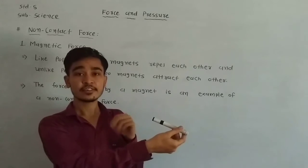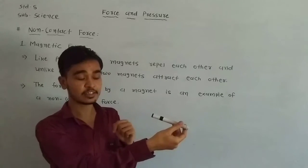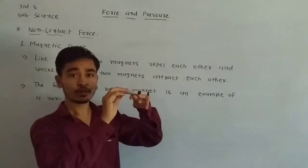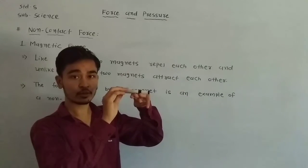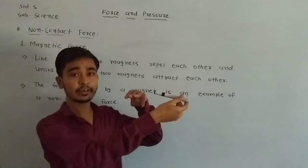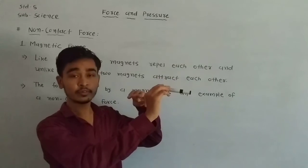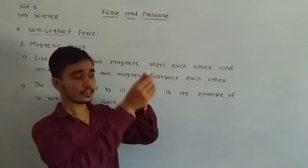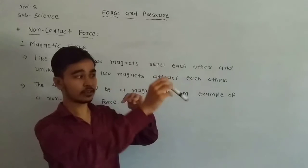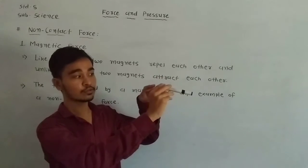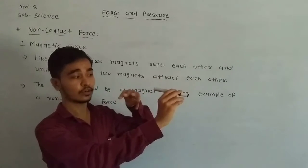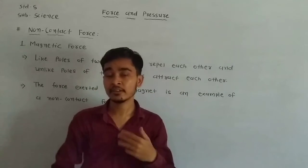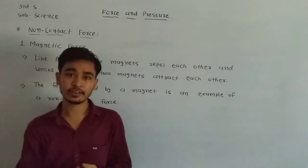Second case में हम क्या करेंगे? हमारा जो दूसरा bar magnet है, पहले bar magnet का south pole है। Second bar magnet के poles को हम change कर लेंगे — यानि कि उस south pole के नज़दीक अब उसका north pole लाएंगे। और फिर से हम observe करेंगे कि क्या हो रहा है।